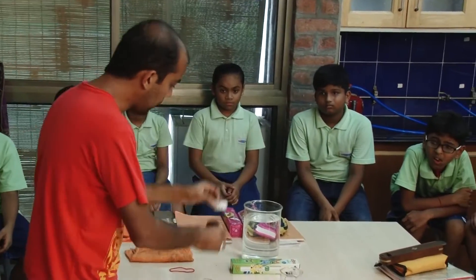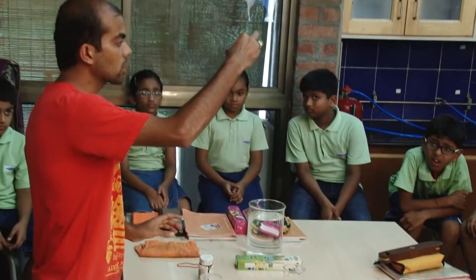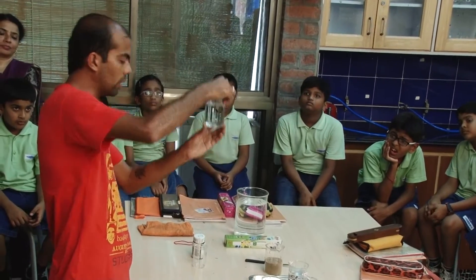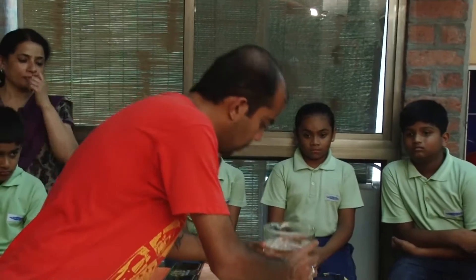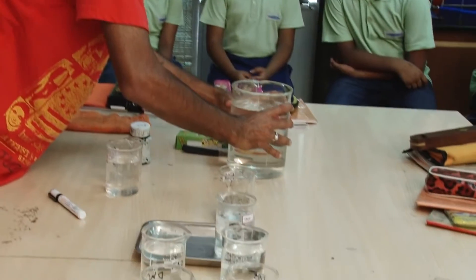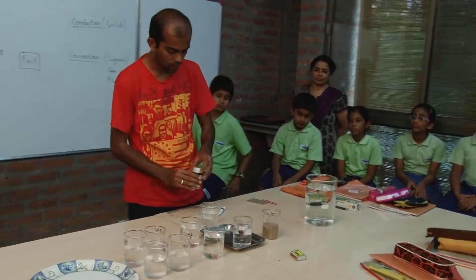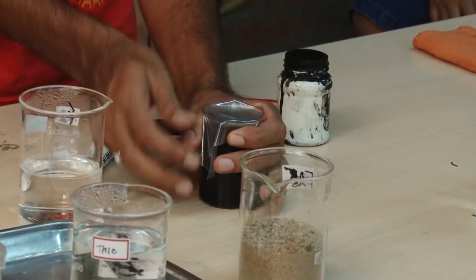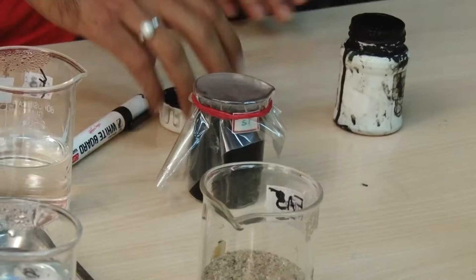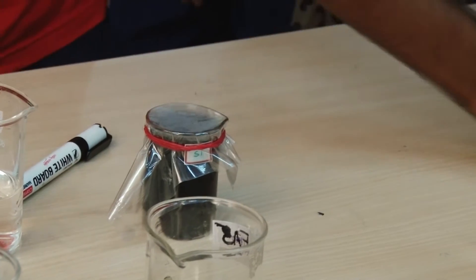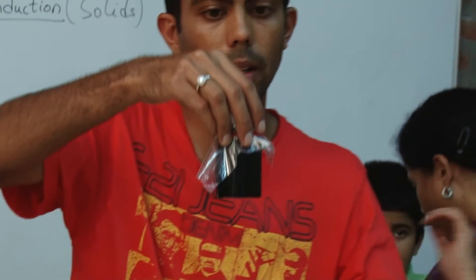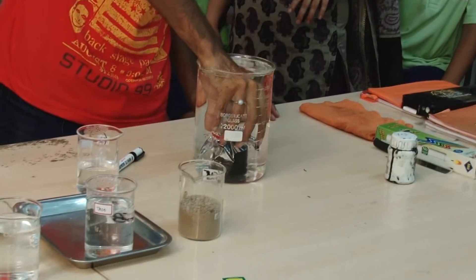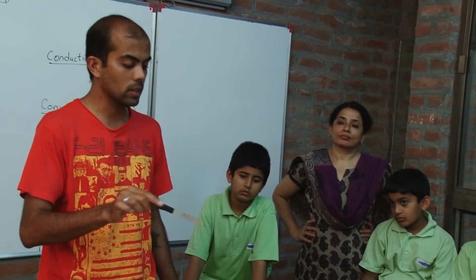I have black paint, a small 80 ml beaker, another beaker which is 200 ml, and a big beaker of 2000 ml. I'll pour some paint into the hot water, then close this beaker completely and tie a rubber band around it.